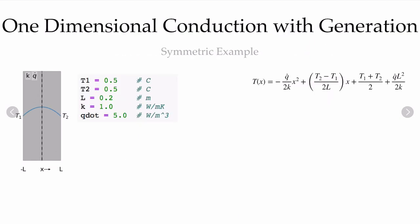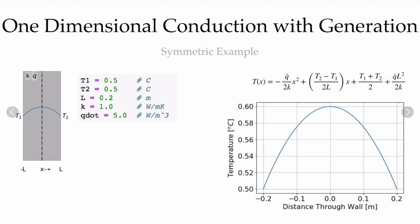Let's start with a symmetric example. I'll take T1 equal to T2 at 0.5, a length of 20 centimeters or 0.2 meters, a thermal conductivity of 1, and a Q-dot of 5 watts per meter cubed. Here is the temperature profile — I have a positive energy generation within the material.